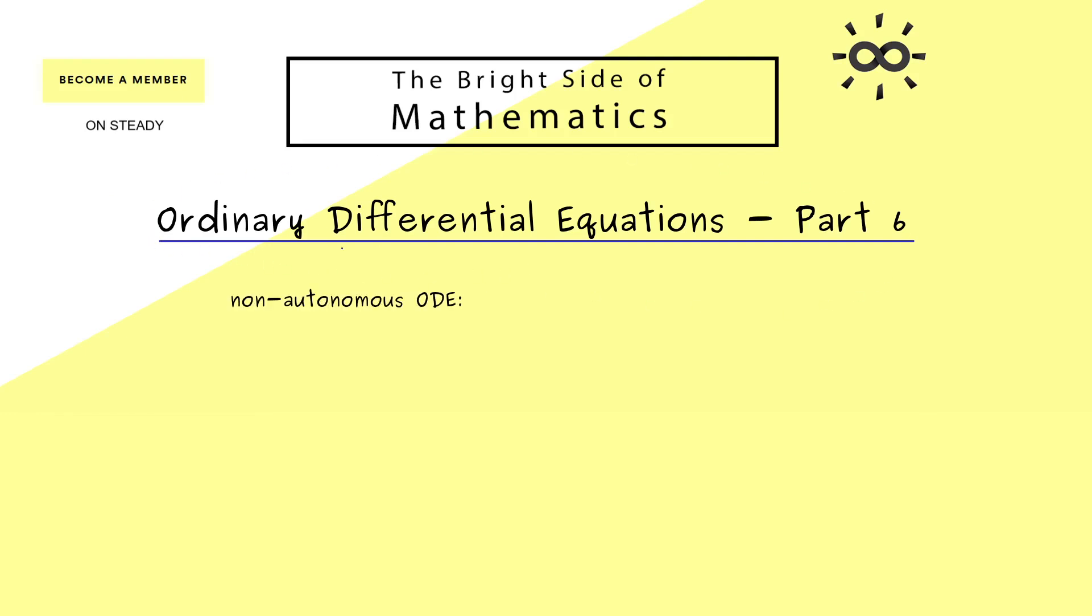Let's immediately start by considering a non-autonomous ODE. We can write this ODE as x dot equals a function w that has two variables as its input: the time variable t and the other one our function x. If t is actually involved in this function w then we speak of a non-autonomous ODE.